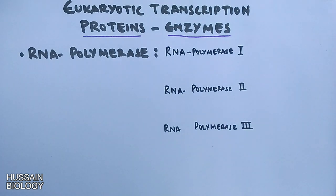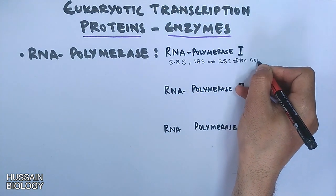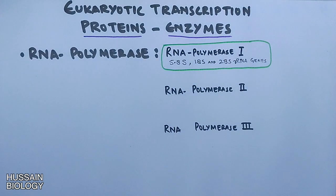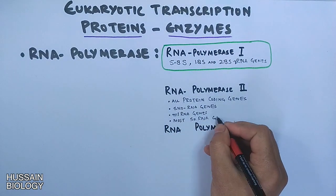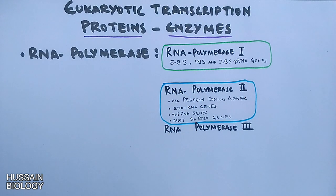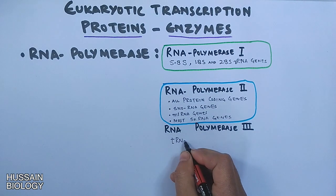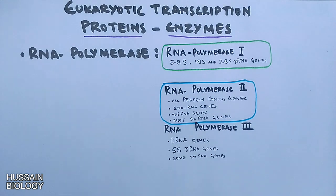All three RNA polymerases transcribe different types of genes. RNA polymerase 1 transcribes genes of 5.8S, 18S, and 28S RNA genes. RNA polymerase 2 transcribes all protein coding genes, and also transcribes snoRNA genes, miRNA genes, and most snRNA genes. Finally, polymerase 3 enzyme transcribes tRNA genes, some snRNA genes, and other small RNA genes.